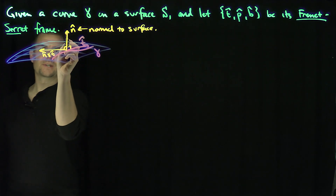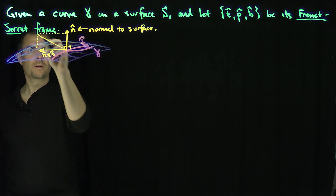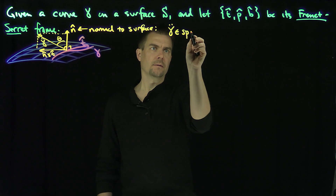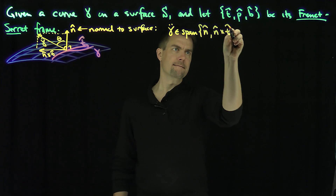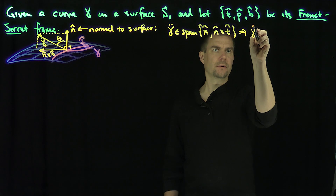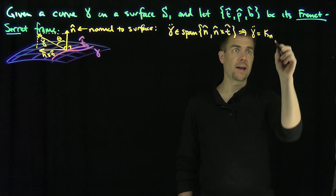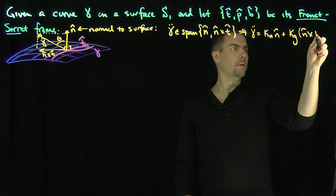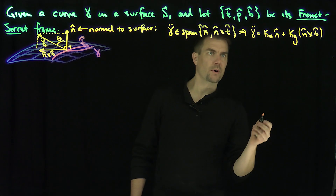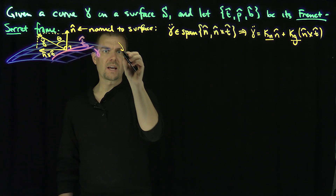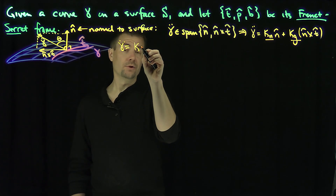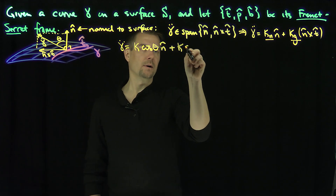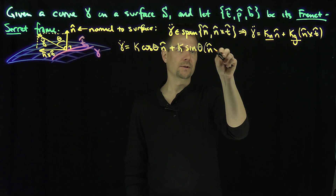We know that gamma double dot has to reside in the plane perpendicular to gamma dot. We call that angle theta. So gamma double dot is in the span of n-hat and n-hat cross t. That allows us to write gamma double dot as k_n in the direction of n-hat, plus kappa_g in the direction of n-hat cross t. These are the normal curvature and the geodesic curvature. So gamma double dot equals kappa cosine(theta) n-hat plus kappa sine(theta) times n-hat cross t-hat.